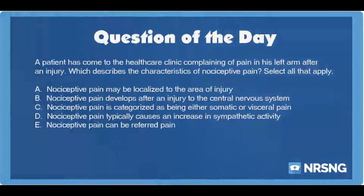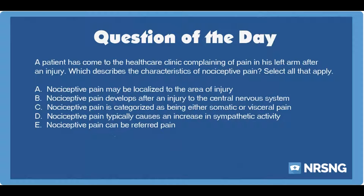The nursing category is musculoskeletal. The NCLEX category is basic care and comfort. A patient has come to the healthcare clinic complaining of pain in his left arm after an injury. Which describes the characteristics of nociceptive pain? Select all that apply.